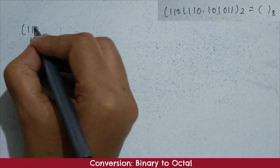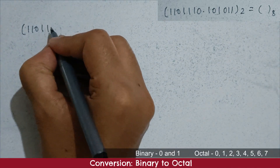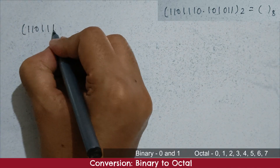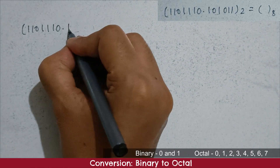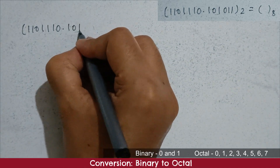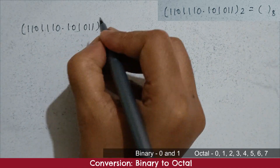You already know, a number is represented in binary using two digits only, 0 and 1. While octal can be represented using digits 0 to 7.